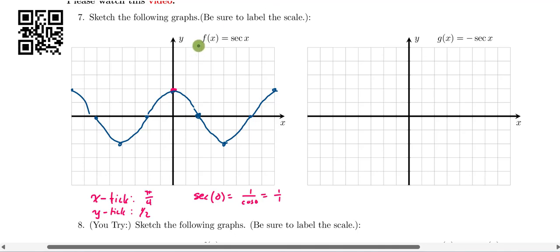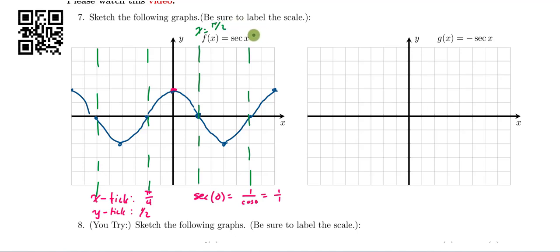I'm going to go ahead and sketch the asymptotes for the secant function that we want to sketch. So here I am sketching the asymptotes for the secant function. So for example, here's x equals pi over 2, x equals 3 pi over 2, and here's x equals minus pi over 2, and x equals minus 3 pi over 2.